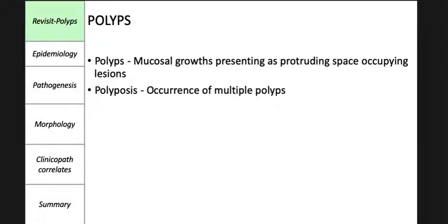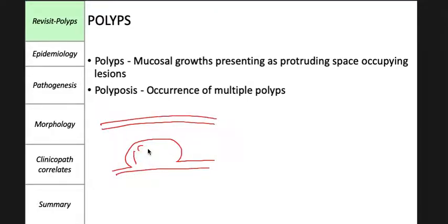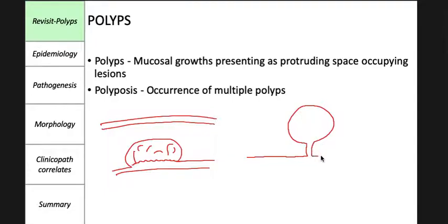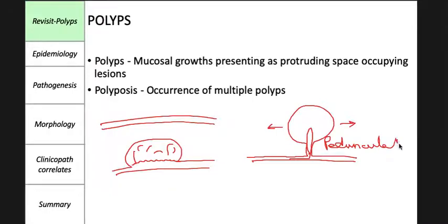Polyps can be sessile, meaning they don't really have a stalk and are firmly attached to the wall of the intestine, protruding into the lumen. In comparison, there are some polyps which are polypoid growths that have a stalk, and this stalk allows them to move freely within the lumen. These are called pedunculated polyps, while the former are called sessile polyps.